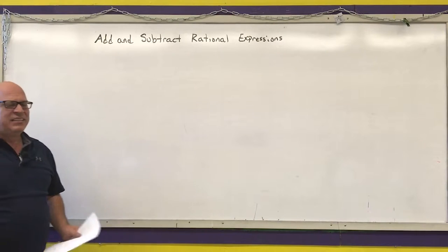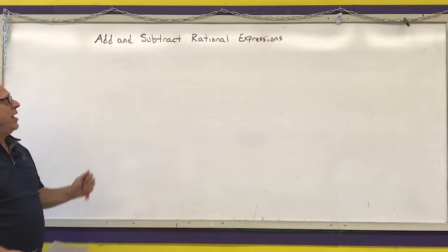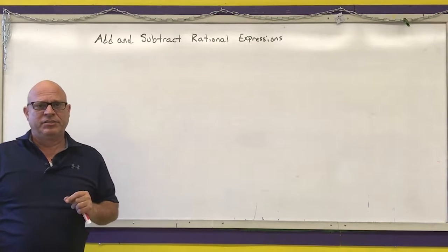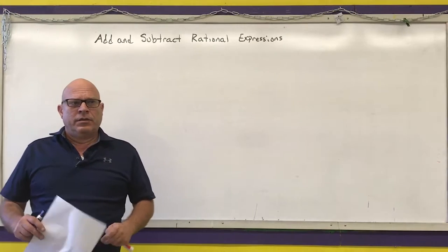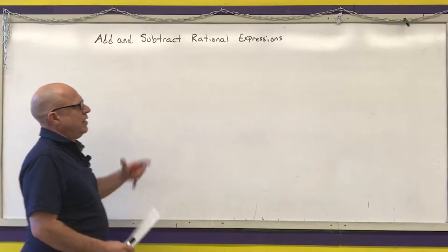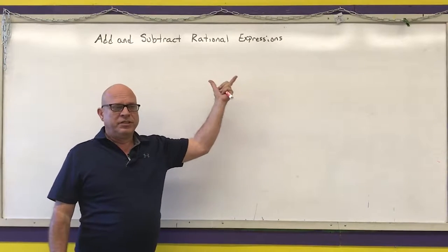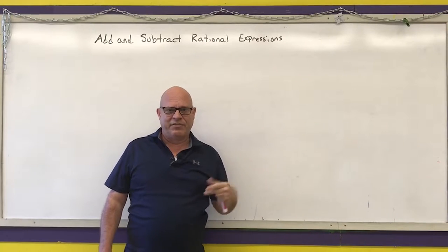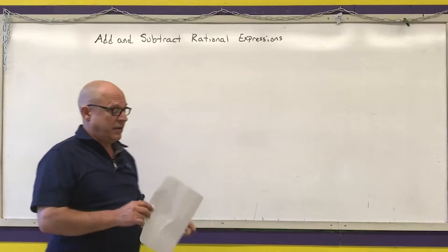Next we're going to discuss adding and subtracting rational expressions. To add and subtract rational expressions, it's just like adding and subtracting fractions — you need a common denominator. Our steps are: find the common denominator, turn all rational expressions into equivalent expressions with that common denominator, add or subtract, and then simplify.